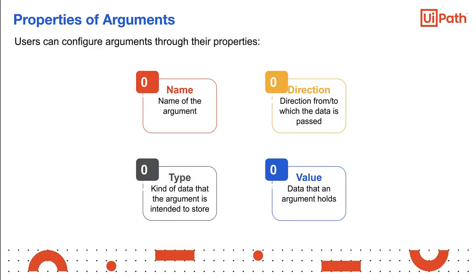Direction: as arguments pass data between workflows, the user needs to specify the direction from or to which the data is passed. It can be in, out, and in and out. We will explain this in the next section.